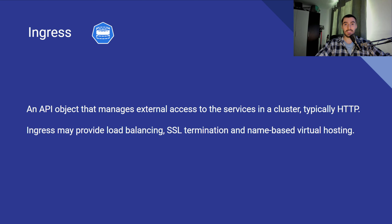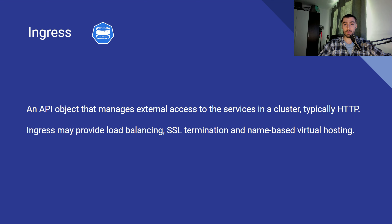If you remember the Kubernetes services episode, some of you may already be wondering: what's the difference between an ingress and a service? A service is like a software load balancer which brings traffic into pods. The ingress, however, is supposed to be layer 7 on the OSI stack because it's HTTP — it's the application layer. So ingresses are layer 7 while services are most commonly TCP or UDP, which is layer 4 on the OSI stack.